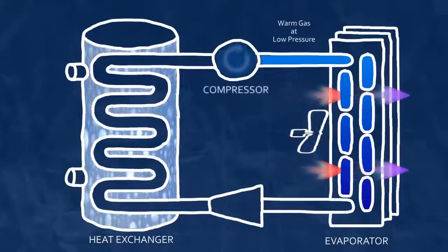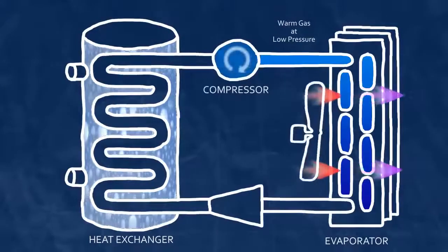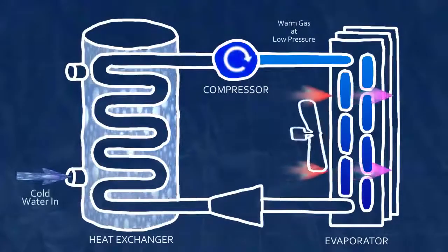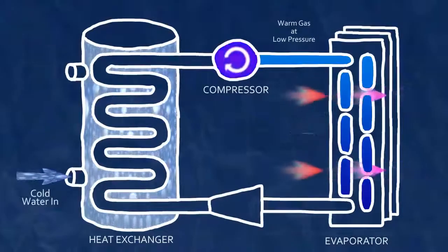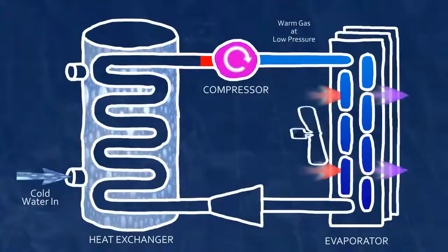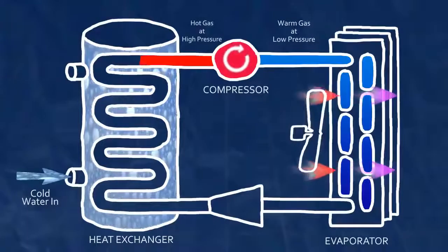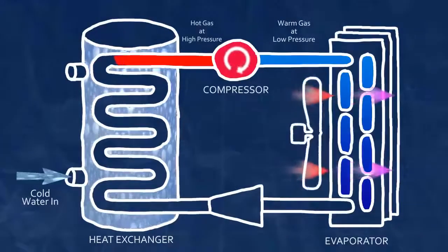The compressor raises the pressure of the gas, which also raises its temperature. Once it's hot enough, the heat will flow from the refrigerant to the water. The compressor next forces the now high temperature, high pressure gas further along the cycle into another heat exchanger called the condenser.